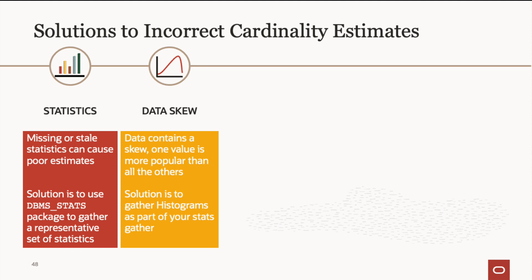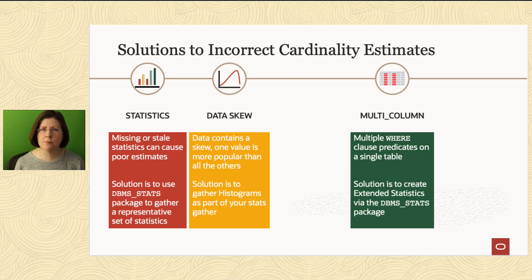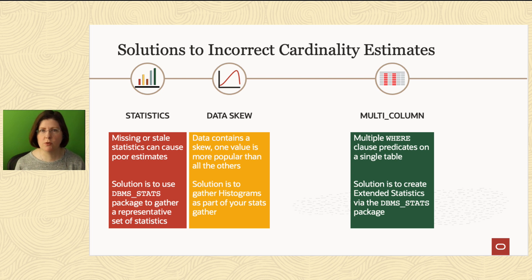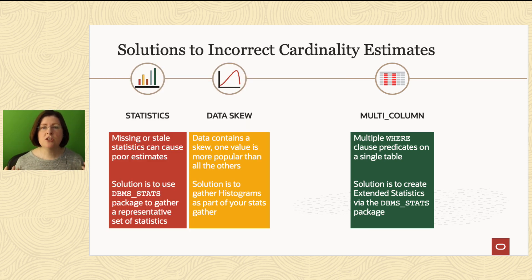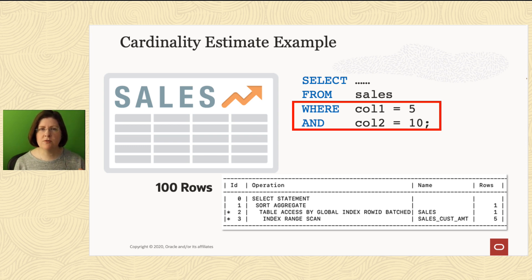Another place that can mislead the optimizer when it comes to cardinality estimates is when we use multiple WHERE clause predicates on a single table. When writing queries, you're told to be as selective as possible — give the optimizer all the information you have so it can filter out unnecessary rows and only return what you're really interested in. The optimizer assumes that each additional WHERE clause predicate will actually reduce the number of rows being returned. So if I say WHERE column one equals five AND column two equals 10, the optimizer assumes that additional predicate will reduce the row count.